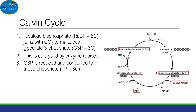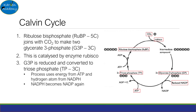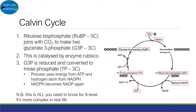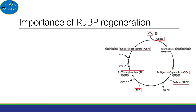The G3P made is reduced and converted to triose phosphate. This process requires ATP and a hydrogen atom from reduced NADP. Hence, NADPH becomes NADP again, so it can be reduced by the light-dependent stage. Note that this is all you need to know for A-level — it is much more complex in real life.